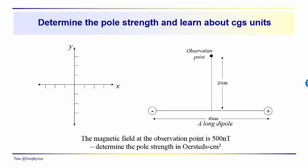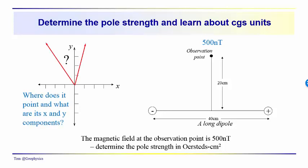You might pause the video at this point and see if you could solve that problem. With 500 nanoteslas, you would want to think about where the resultant vector field intensity is pointing. What are the components of the magnetic field intensity associated with both the positive and the negative pole, and how do they resolve in the x and y directions?